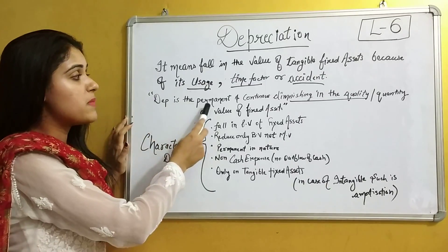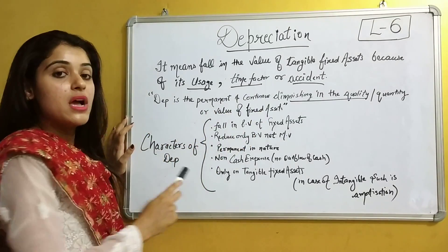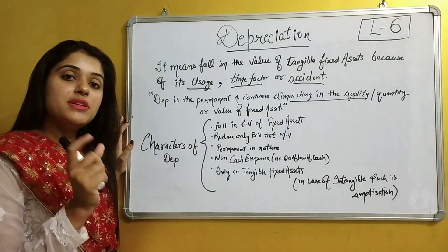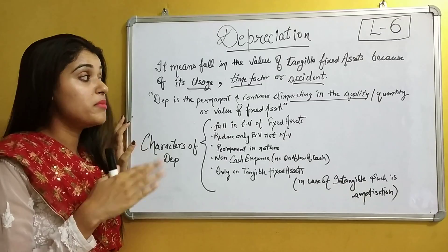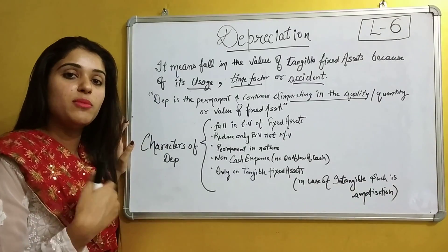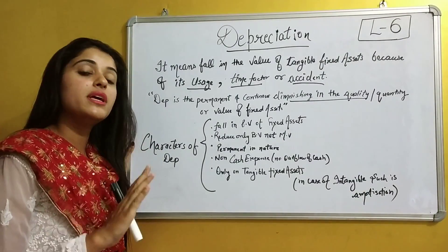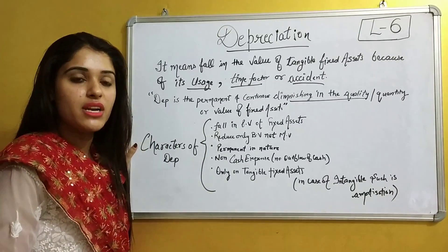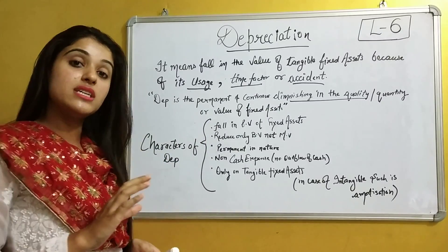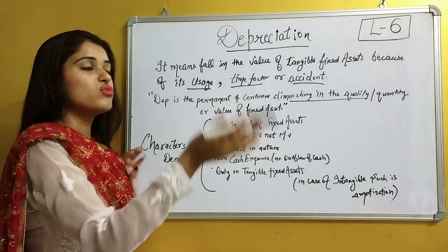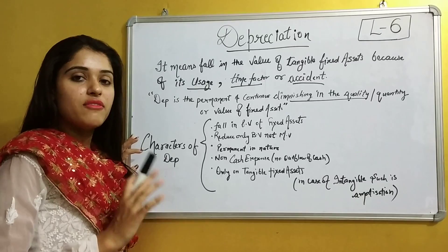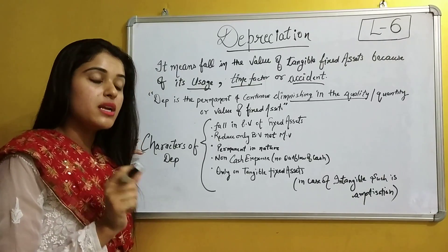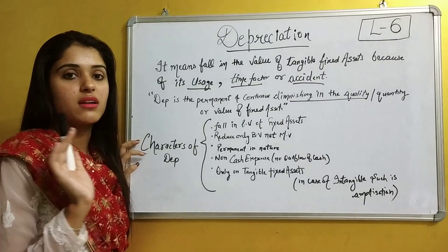Depreciation is permanent and continuous diminishing. When we use our assets, they are going to depreciate. The amount of depreciation that we decrease the value by is permanent in nature. It is not that one year I decreased my asset by 10,000, then next year I restore it by 10,000. When we reduce our fixed assets by a certain amount and call that the depreciation, we can't take it back.